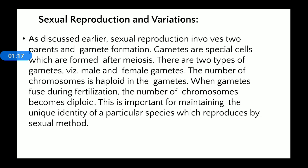Fertilization leads to maintaining the chromosome number — the chromosome becomes diploid in the zygote. In sexual reproduction, meiosis helps maintain the chromosome number in the offspring. After meiosis, fusion of male and female gametes takes place, leading to formation of the zygote and offspring, which contain the same number of chromosomes.